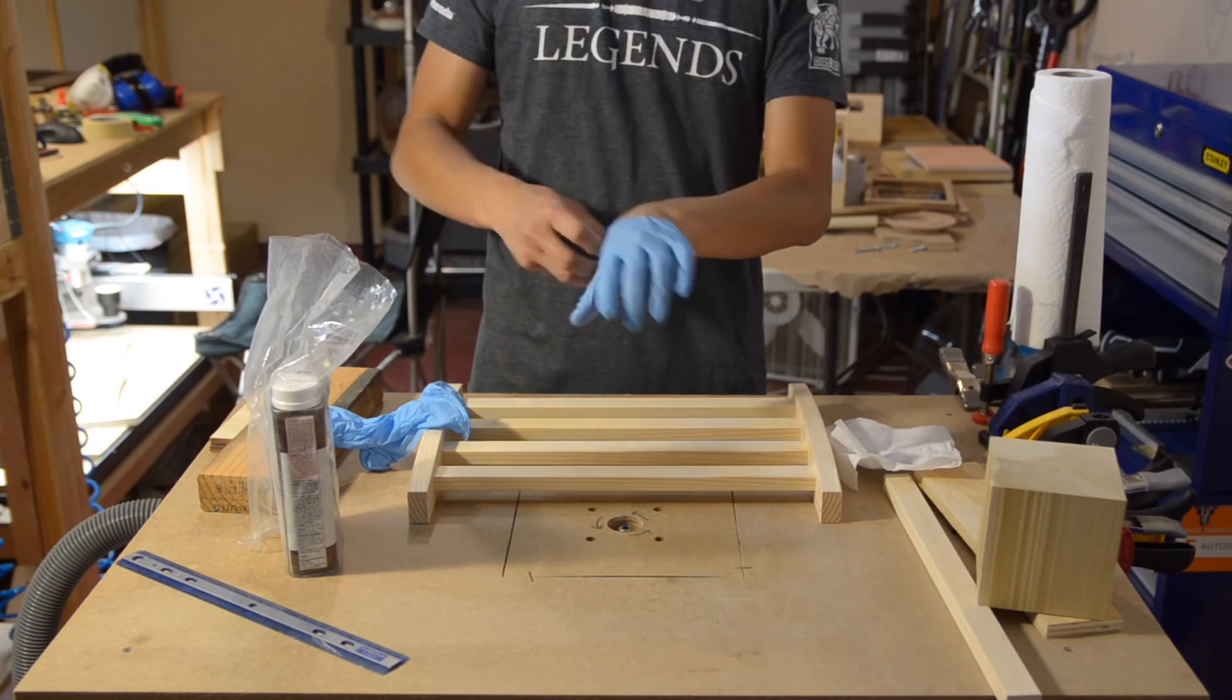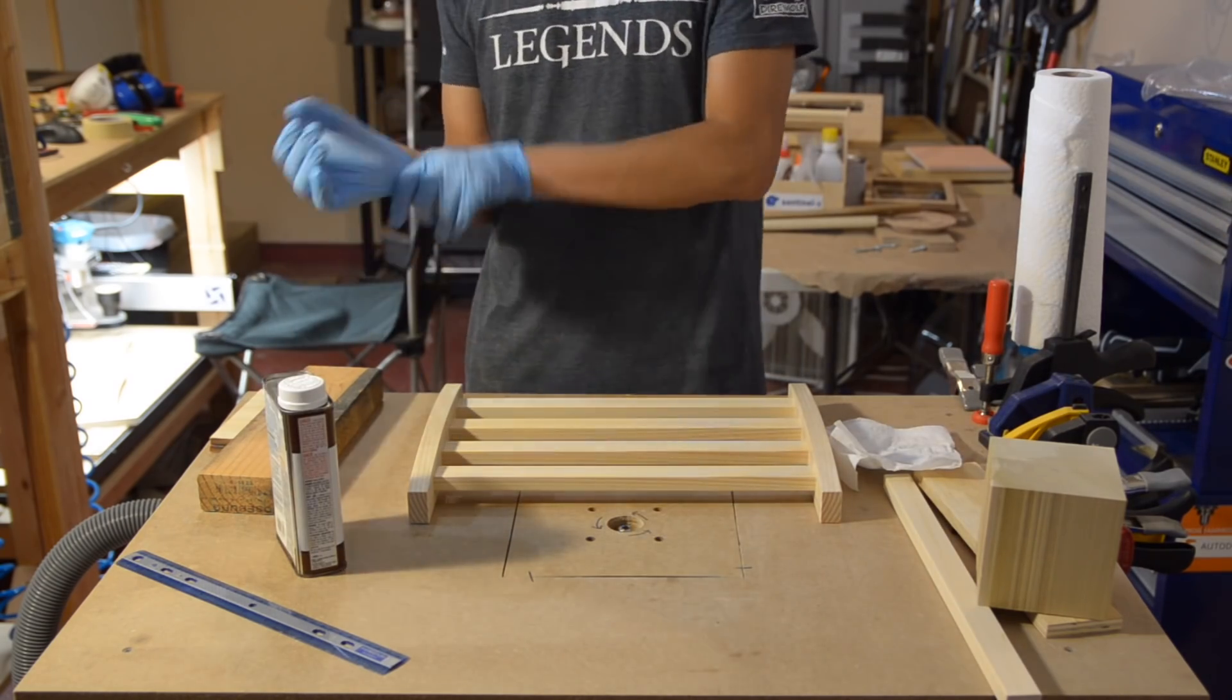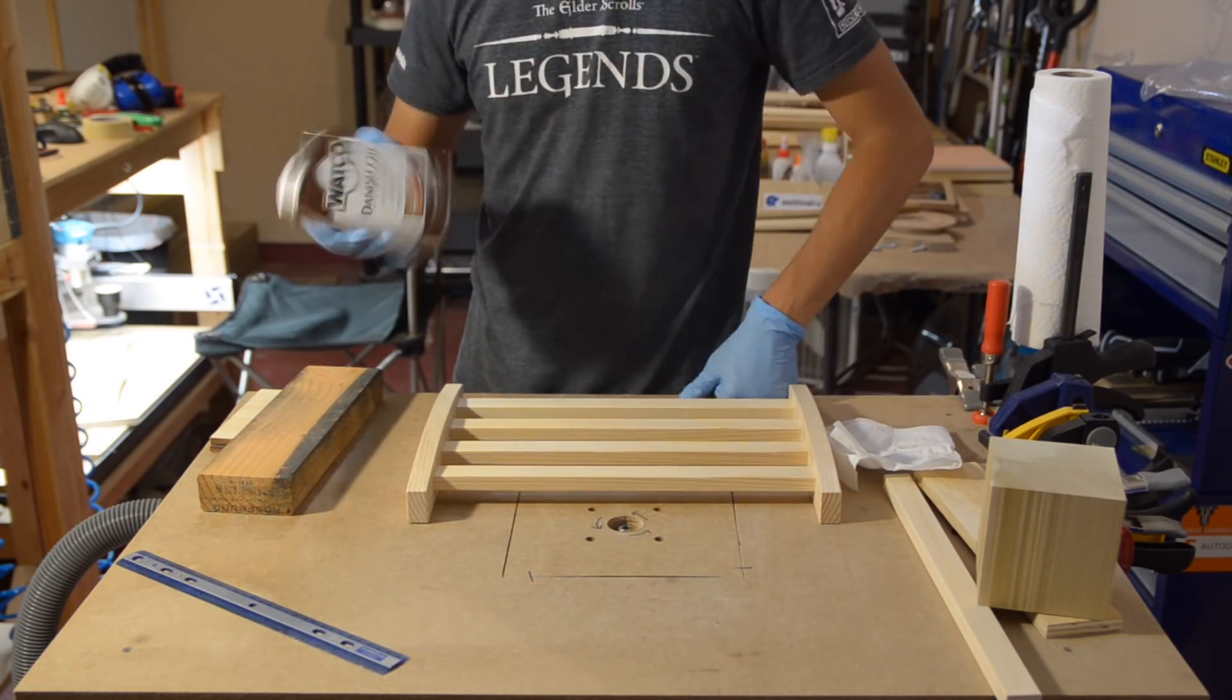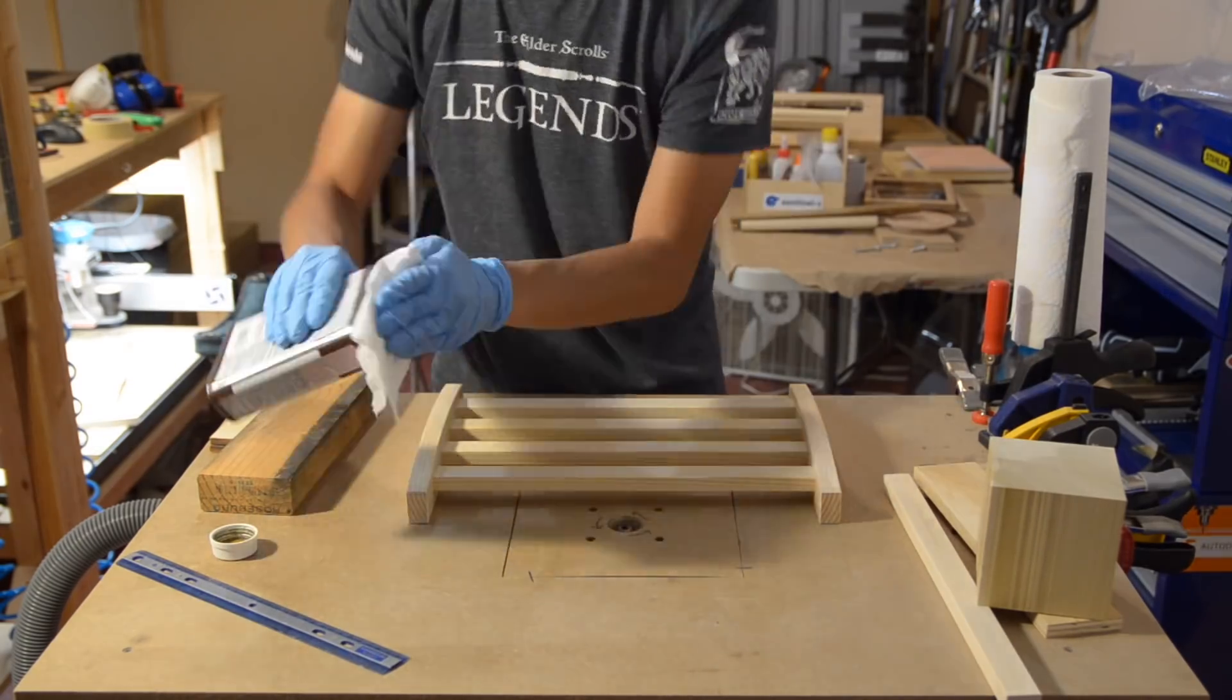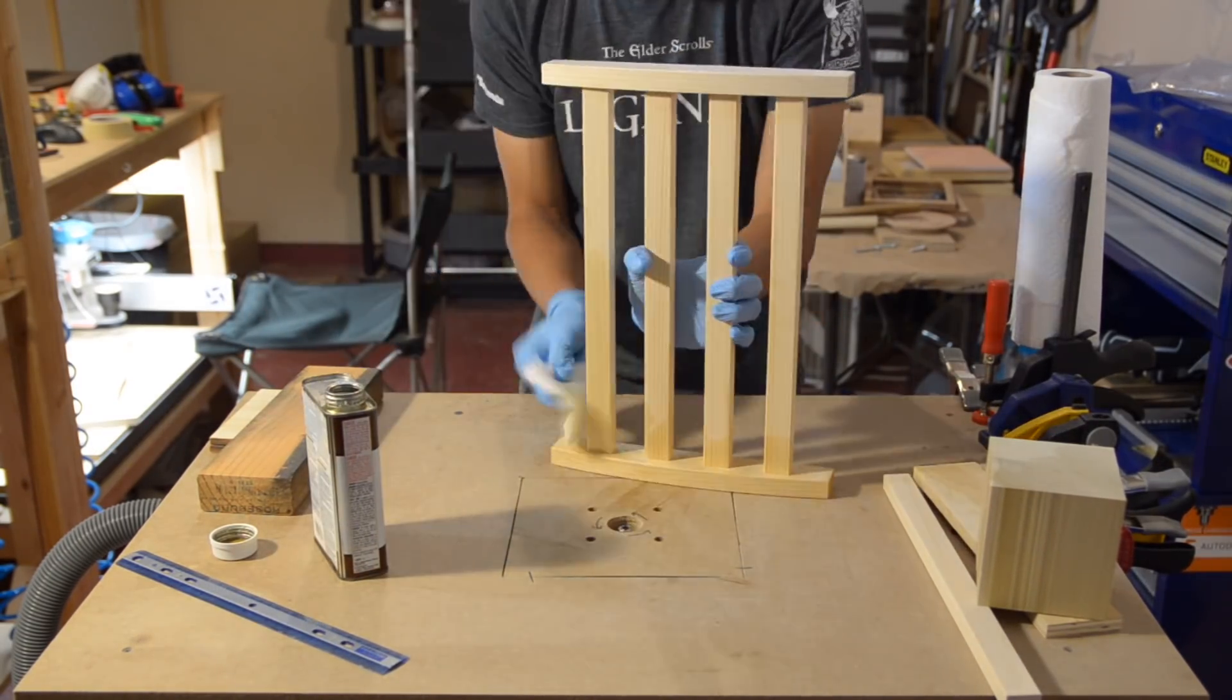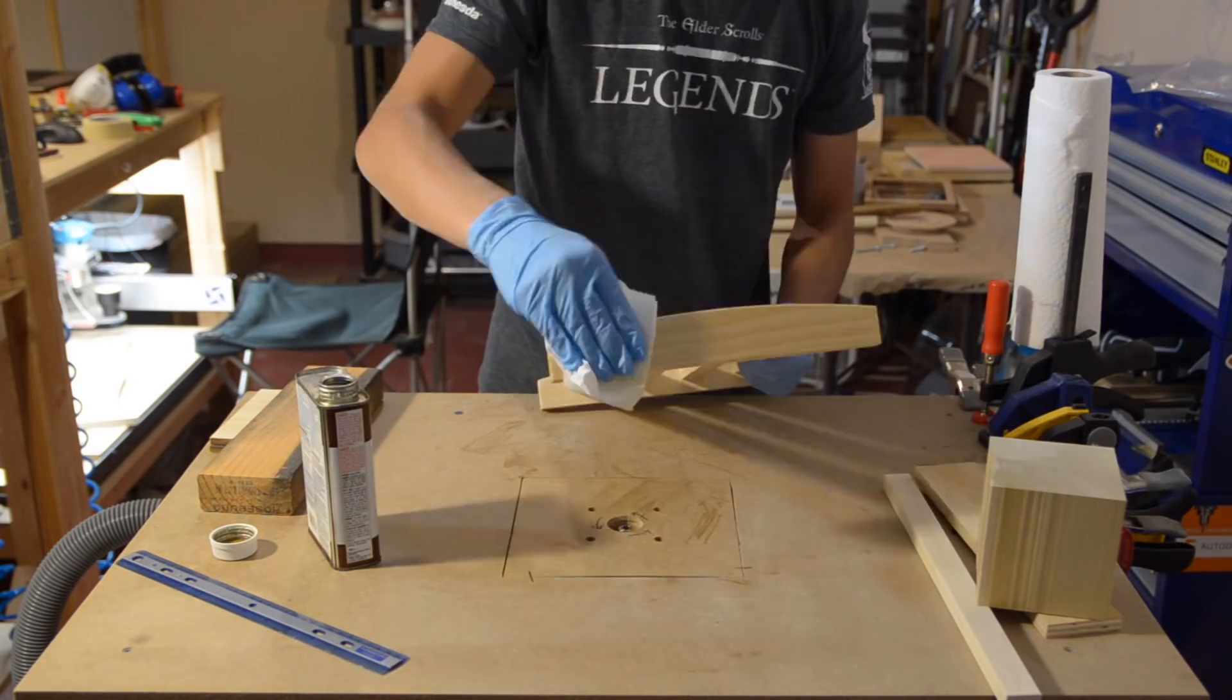Anyway, after convincing my pieces to fit together, I applied a coat of Danish oil according to the instructions on the container. This just gives the wood a little more richness and protection while preserving a natural appearance. And it's plenty durable enough for the minimal handling that this piece will see.